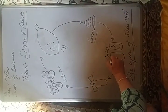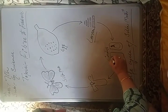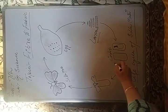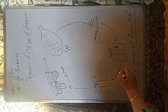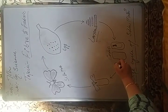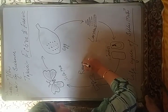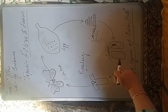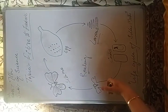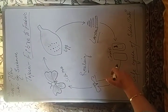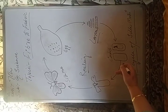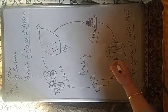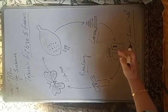The larvae secretes a fiber made of protein and begins to spin a cocoon around itself. When the cocoon comes into contact with air, it becomes hard. These cocoons are given to farmers, who boil them to obtain the fibers. The fibers are then spun into thread, dyed, and woven to produce silk fabric.